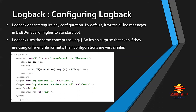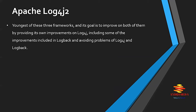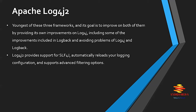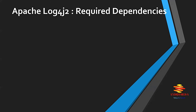Log4j2 is the youngest of these three frameworks. Its goal is to improve on both predecessors by incorporating improvements from Logback while avoiding their problems. Like Logback, Log4j2 provides SLF4J support, automatically reloads logging configuration, and supports advanced filtering options. In addition, it allows lazy evaluation of log statements based on lambda expressions, offers asynchronous loggers for lower-latency systems, and provides a garbage-free mode to avoid latency caused by garbage collector operations. All these features make Log4j2 the most advanced and fastest of the three frameworks.